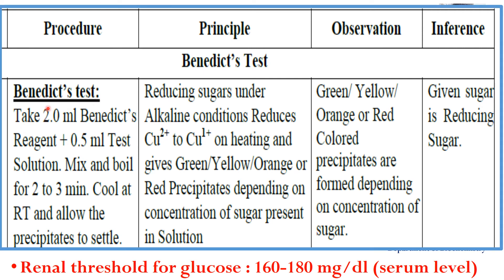For the Benedict test, we need 2 ml of Benedict's reagent and 0.5 ml of the urine sample. These are mixed, boiled for 2 to 3 minutes, allowed to cool at room temperature, and the precipitates are allowed to settle. The principle: the reducing sugar under alkaline conditions reduces cupric (Cu²⁺) to cuprous (Cu⁺) on heating. This change in oxidation state gives green, yellow, orange, or red precipitate depending on the concentration of sugar present. If these changes occur, the sample contains reducing sugars.